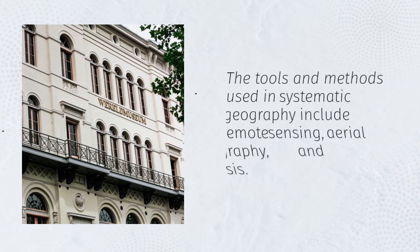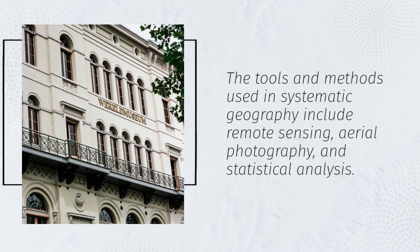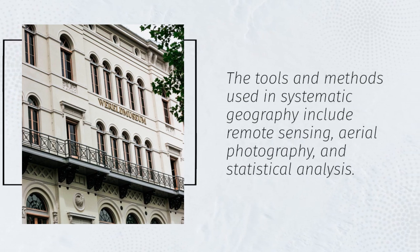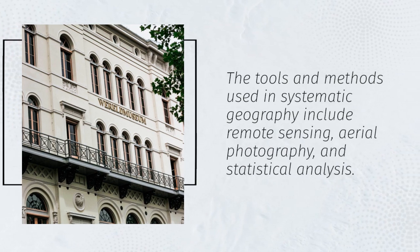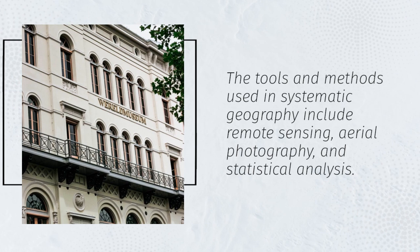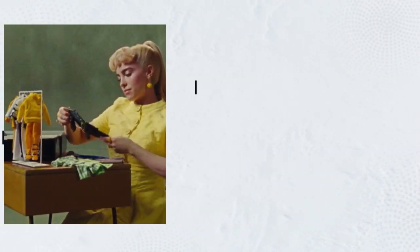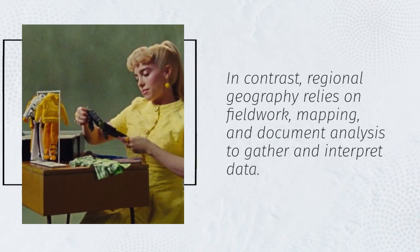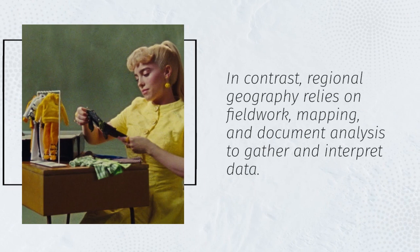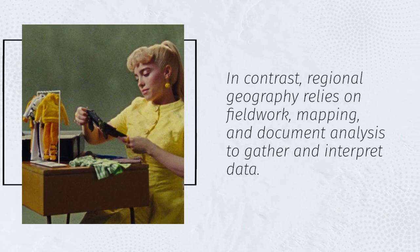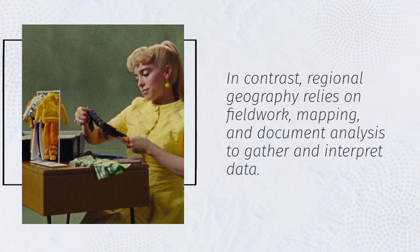The tools and methods used in systematic geography include remote sensing, aerial photography, and statistical analysis. In contrast, regional geography relies on fieldwork, mapping, and document analysis to gather and interpret data.